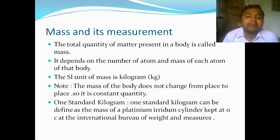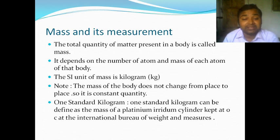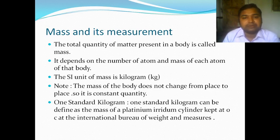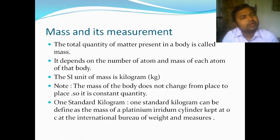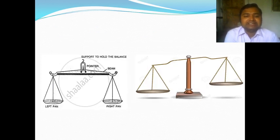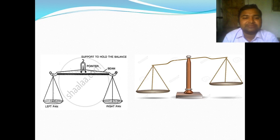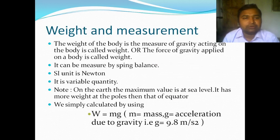One standard kilogram is defined as the mass of a platinum-iridium cylinder kept at zero degrees at the International Bureau of Weights and Measures. Before this, there was no accurate standard measurement. At the International Bureau of Weights and Measurements, held in 1960, one accurate measurement was formed, so now there is equal measurement all over the world. We can measure mass using a beam balance.